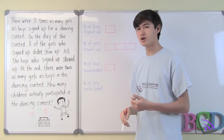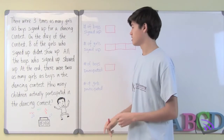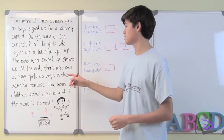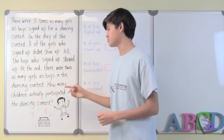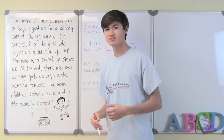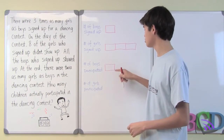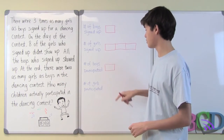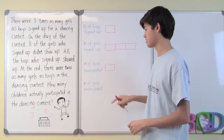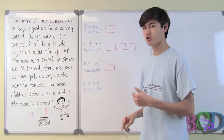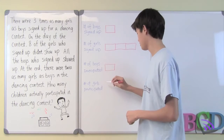Finally, the question tells us that there were twice as many girls as boys in the dancing competition, so we can use two of these bars to represent the number of girls who participated.